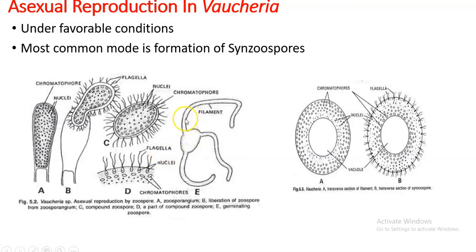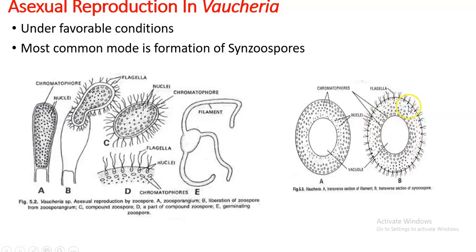After settling, a germ tube forms from the synzoospore, which elongates and forms a new thallus. Taking a cross-section, there is a central color vacuole. In the vegetative condition before synzoospore formation, nuclei were towards the vacuole and chromatophores towards the periphery. During synzoospore formation, chromatophores come to the vacuolar side and nuclei move to the periphery, with flagella arising from each nucleus.